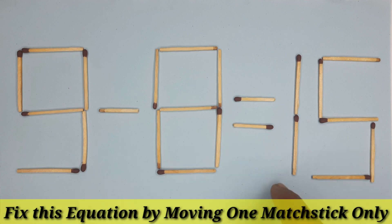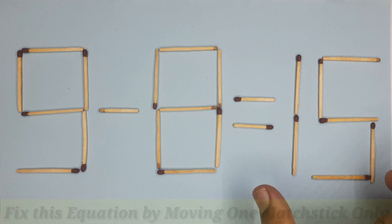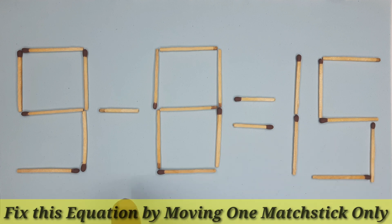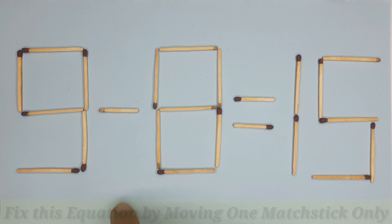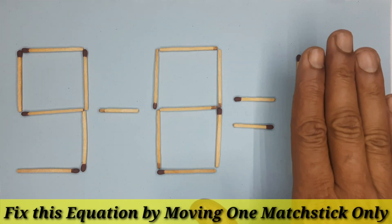Either I should increase left hand side or decrease right hand side. 9 minus 8 is equal to 1, we all know that. So for fixing this equation, making 9 minus 8 equals 1, I have to eliminate 5.